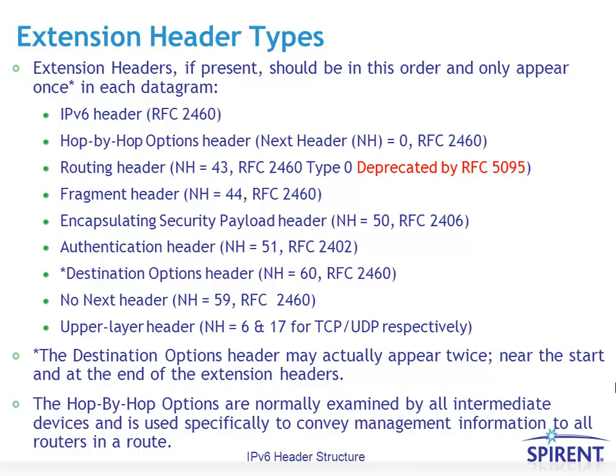For IPsec, there is the encapsulation security payload header with next header value of 50, and the authentication header with next header value of 51, described in RFC 2406 and RFC 2402 respectively. There could also be a destination options header with next header value of 60, followed by either no next header — value of 59 — or some upper layer protocol, so next header value 6 or 17 for TCP and UDP respectively. Hop-by-hop options are normally examined by all intermediate devices and are used to convey management information to all routers within the route.